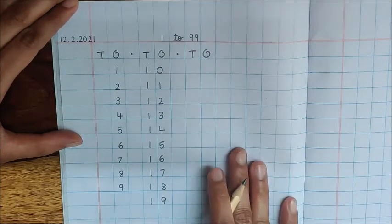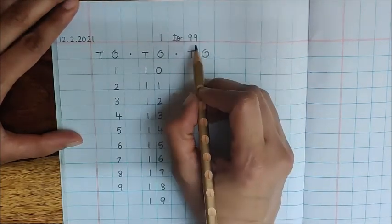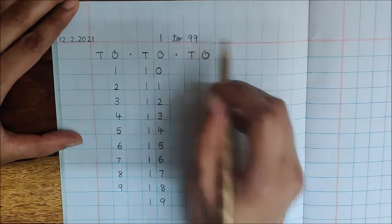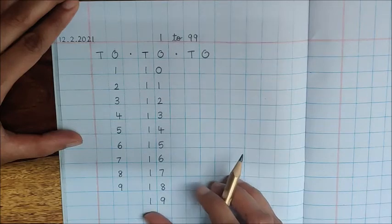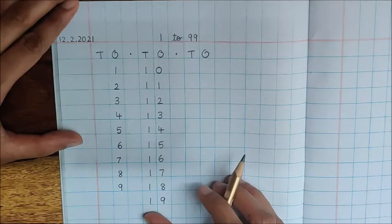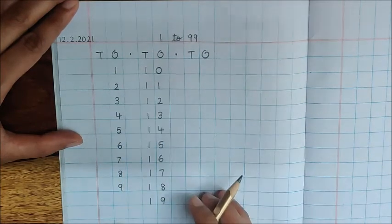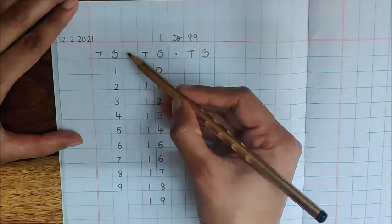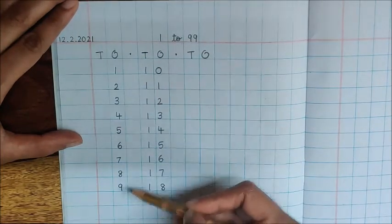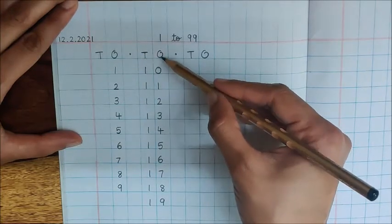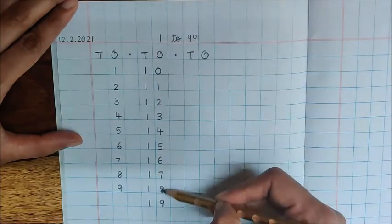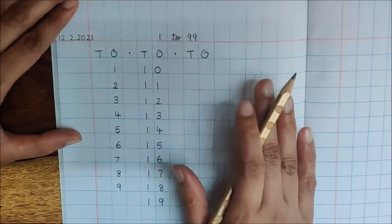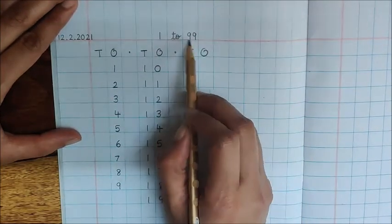Then again you will put a dot, then write down T.O., and like this, children, you will keep doing till you reach the number 99. You have to write further 1 to 99.